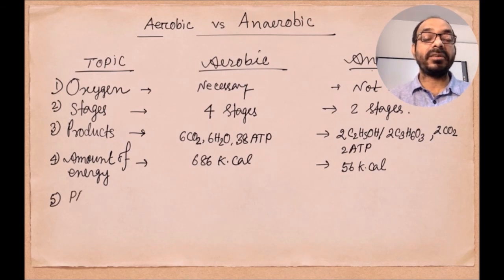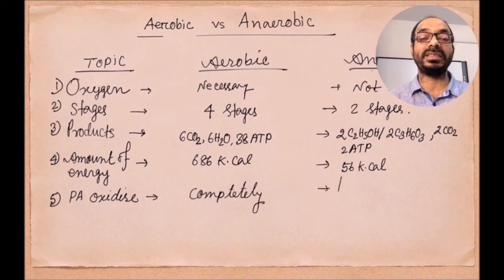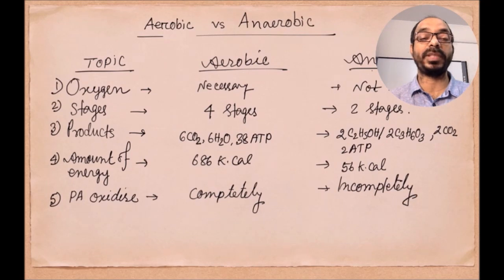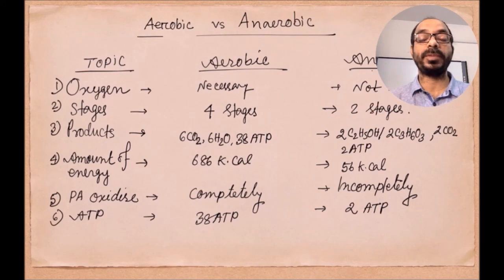During aerobic respiration, pyruvic acid is completely oxidized. But there is no complete oxidation in anaerobic respiration — incomplete oxidation occurs because the second stage of anaerobic respiration is incomplete. Generally, 38 ATP are produced during aerobic respiration, while only two ATP are produced during anaerobic respiration from one molecule of glucose.